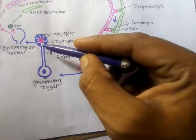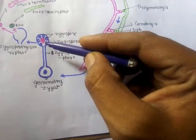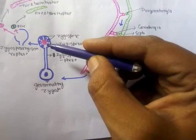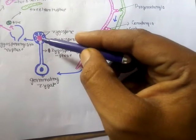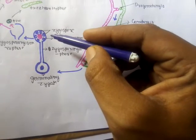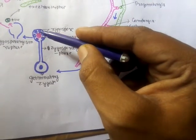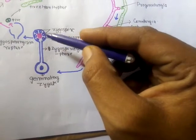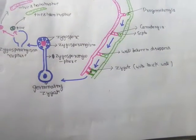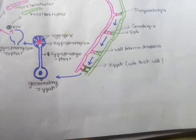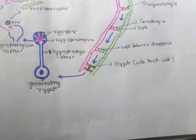Inside the zygosporangium, the cytoplasm is divided into two parts — similar to what occurs in asexual reproduction. The peripheral part containing the nuclei is known as the sporyngioplasm, and the central part contains vacuoles. In the peripheral part, spores develop and these spores are known as zygospores.